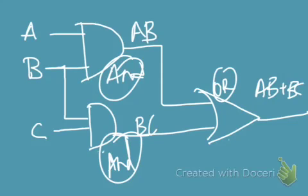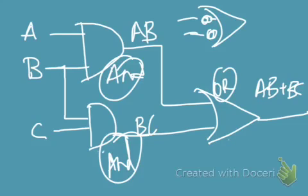The basic point to remember in NAND gate realizations is: a bubbled OR gate is equivalent to a NAND gate. If there are bubbles on the inputs of an OR gate, that is called a bubbled OR gate and it can be replaced with a NAND gate. And an AND gate with a bubble on the output side is already a NAND gate.